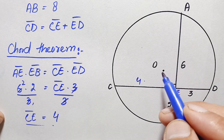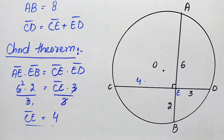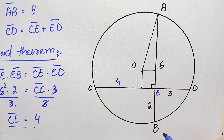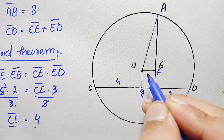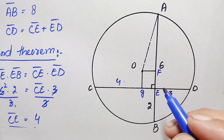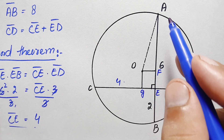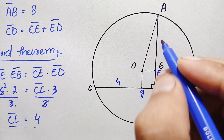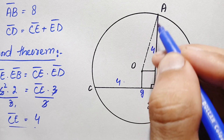Next, we will draw two perpendiculars from the center to the two chords AB and CD. After drawing these perpendiculars, the center connects chord AB at point F and chord CD at point G. We know that if we draw any perpendicular to any chord from the center, it divides the chord into two equal segments. So the length of AF will be half of AB, which is 4 units.